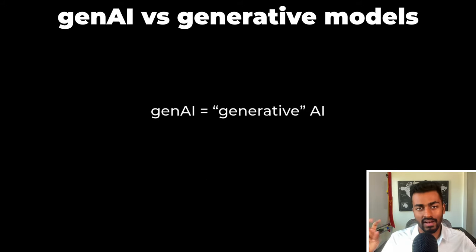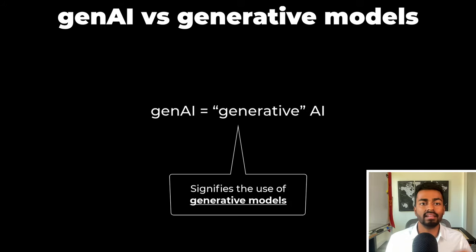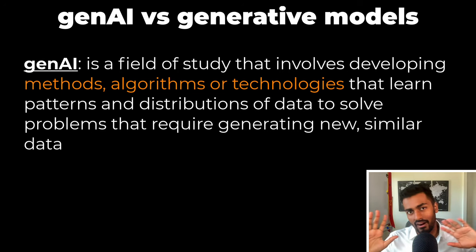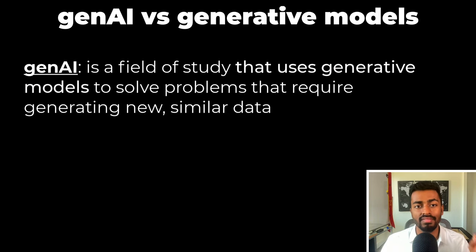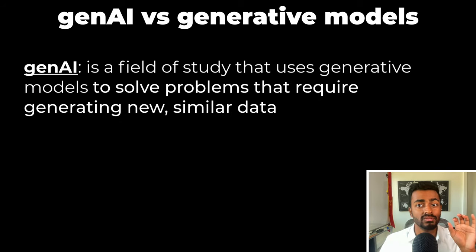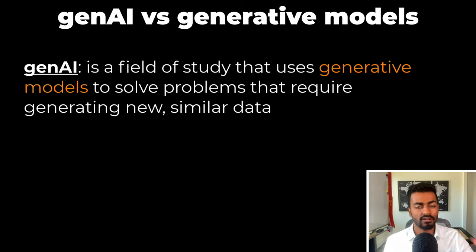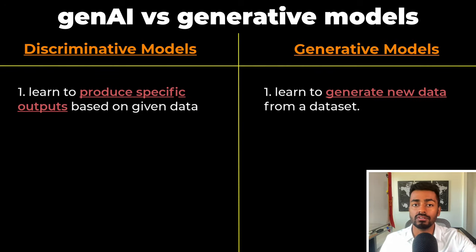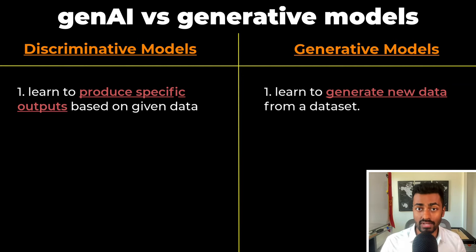The term 'generative' has some precedence before Gen AI became popular, used in the context of generative models. So what's the relationship between Gen AI and generative models, and what are generative models? Generative AI is a field of study that uses generative models to solve problems that specifically require the generation of new data. There are two classes of machine learning models: discriminative models and generative models. Discriminative models learn to produce specific outputs based on some given data. Generative models learn to generate new data from a dataset.